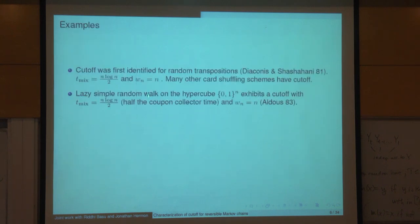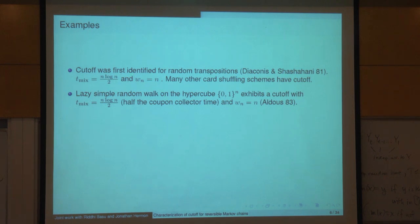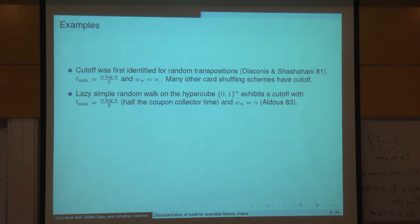The first examples were by Diaconis and Shahshahani. The mixing time for random transpositions is N log N over 2, and the cutoff window is N — a lot more precise information was also obtained. Remember: you pick two cards at random, one with your left hand, one with your right hand, swap them. You might pick the same card, which gets rid of the periodicity.